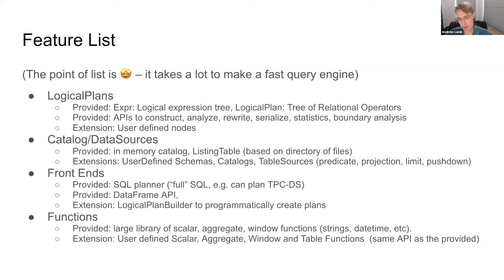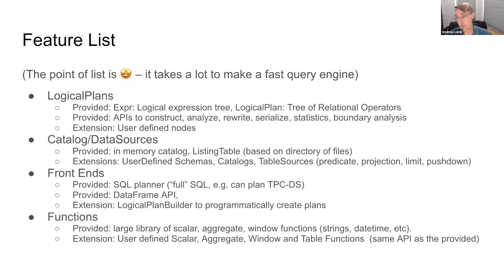You need a way to represent catalog information like what tables and schemas are available, and of course the API to extend it. You need the actual planning of SQL text into an initial plan, which is a non-trivial piece of code. We also have a DataFrame API and programmatic ways to build plans directly — all of which we use in IOx.